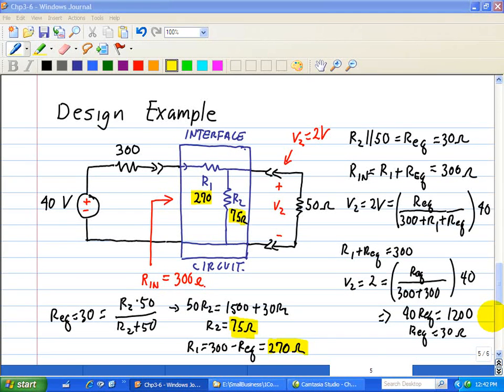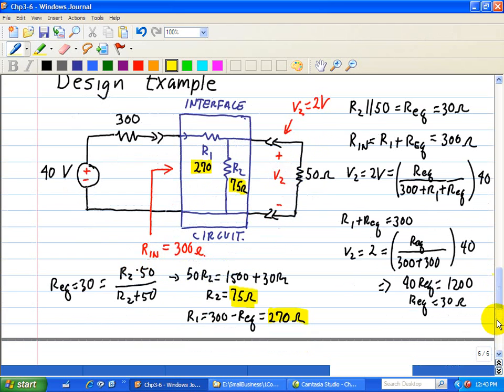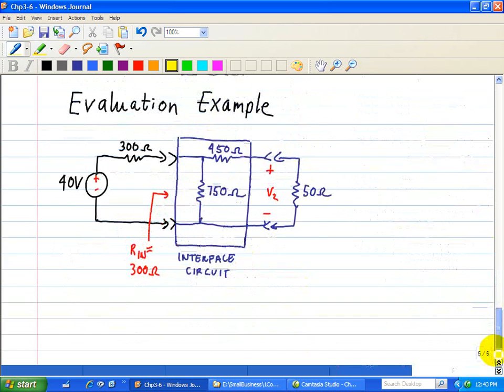In an earlier video, we designed an interface circuit with R1 equal to 270 ohms and R2 equal to 75 ohms. That design satisfied the input resistance of 300 ohms and an output V2 equal to 2 volts. Now we have another design claimed to satisfy these same requirements: V2 equal to 2 volts and input resistance of 300 ohms.